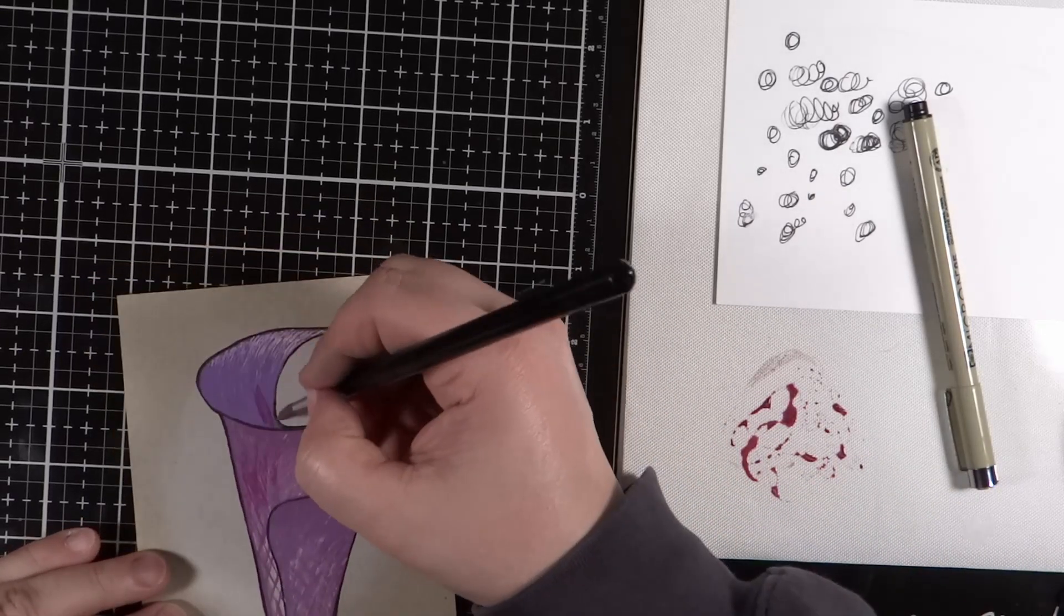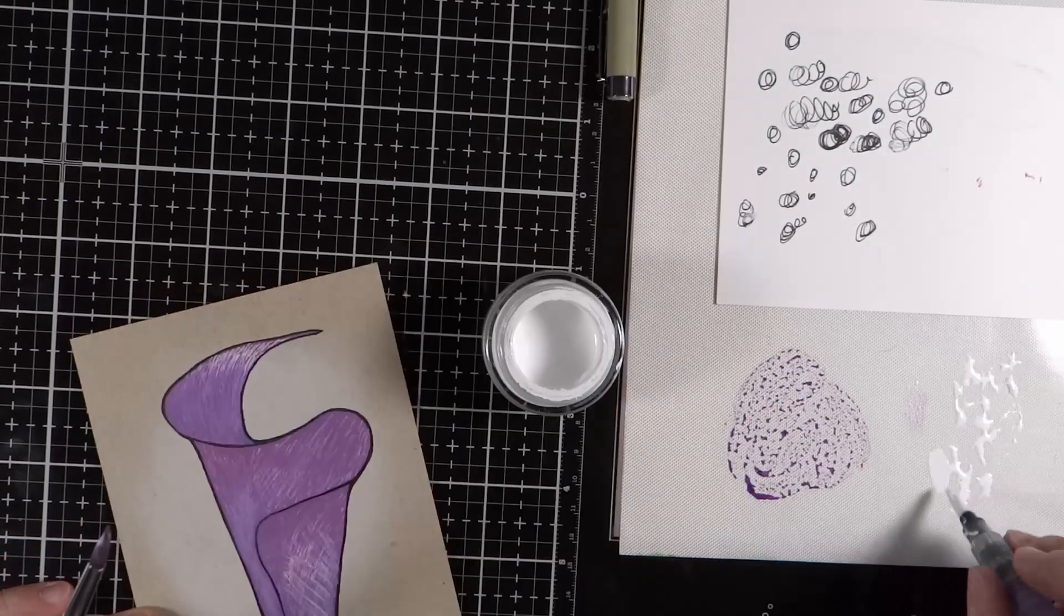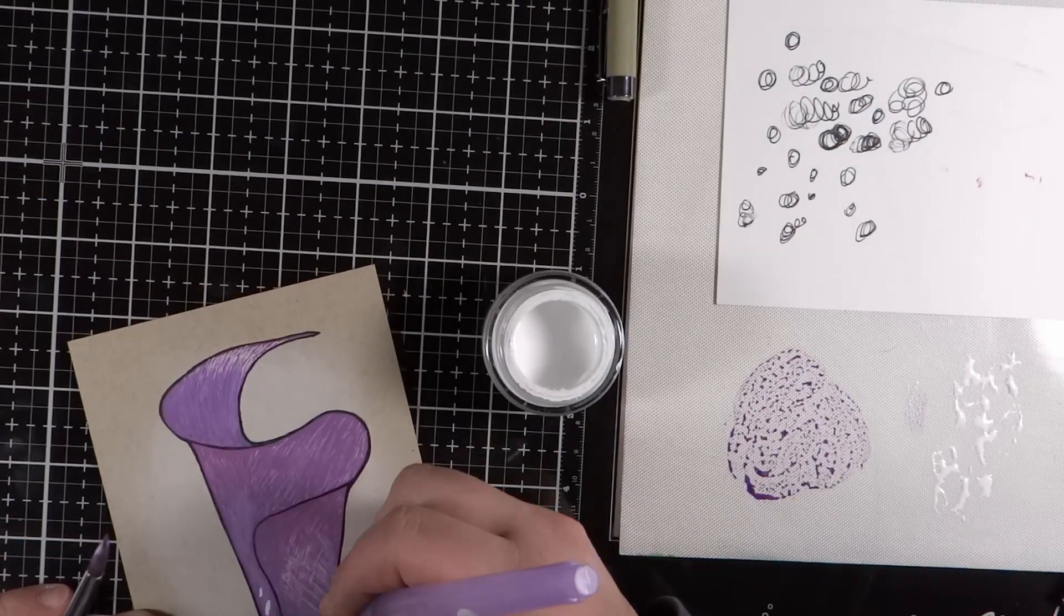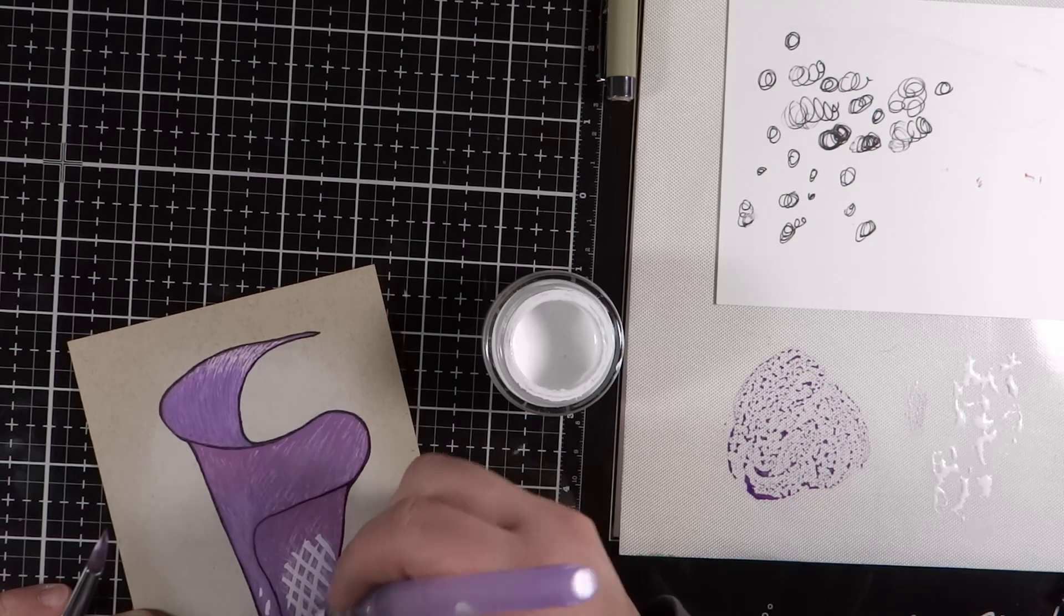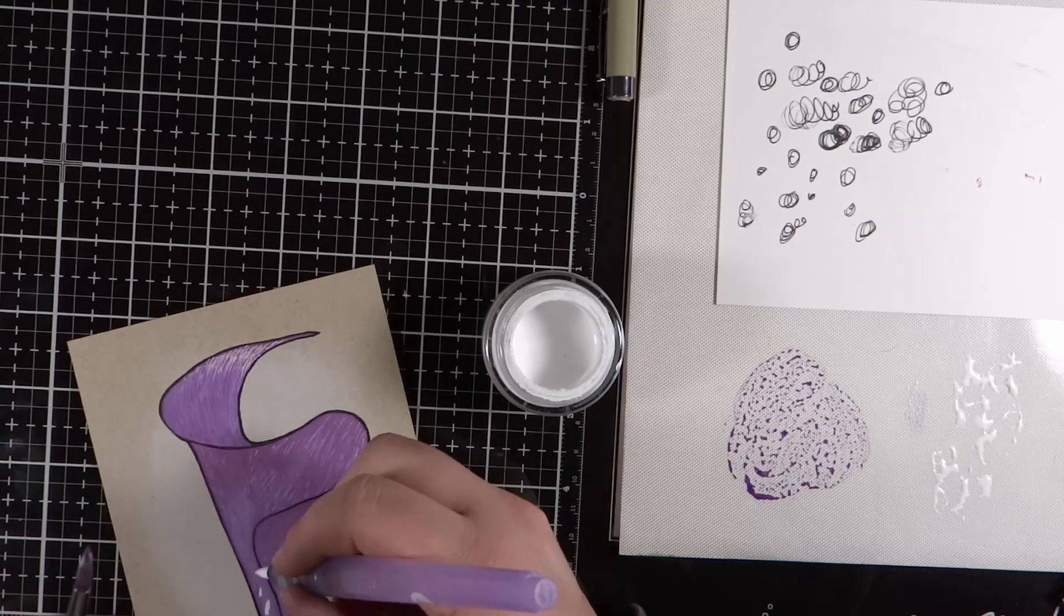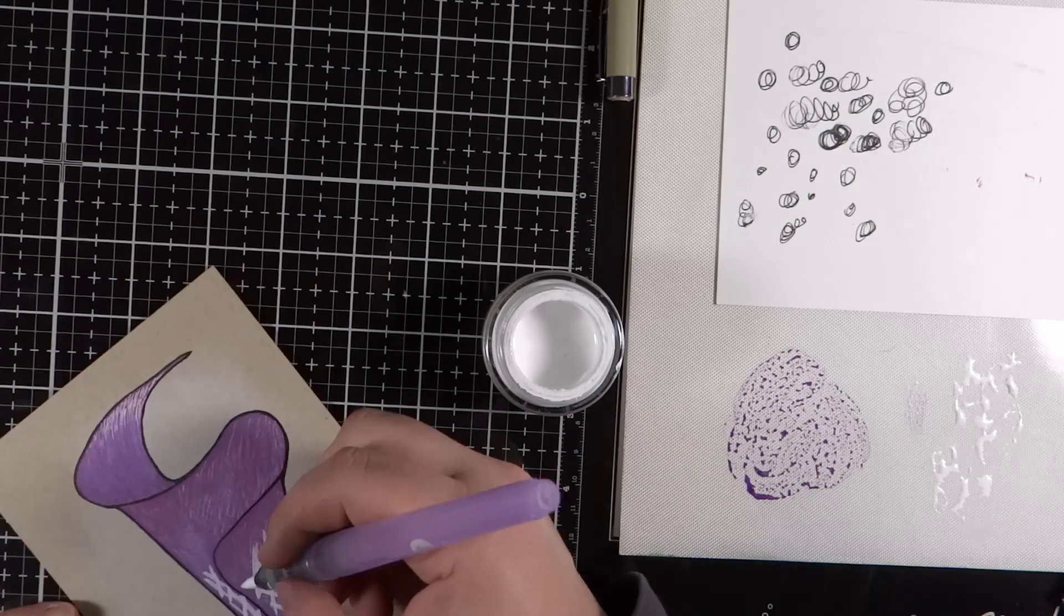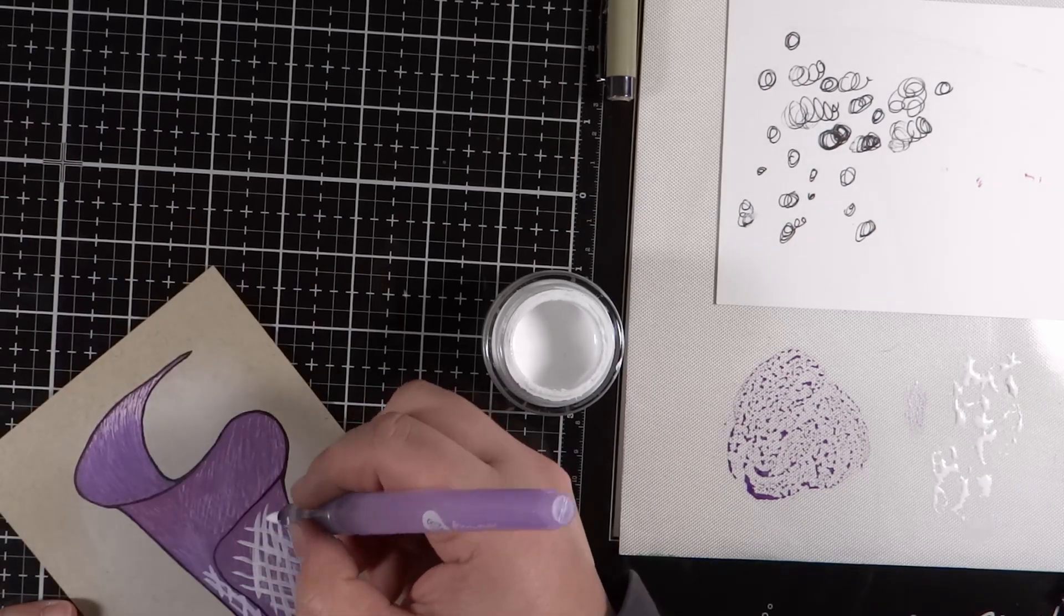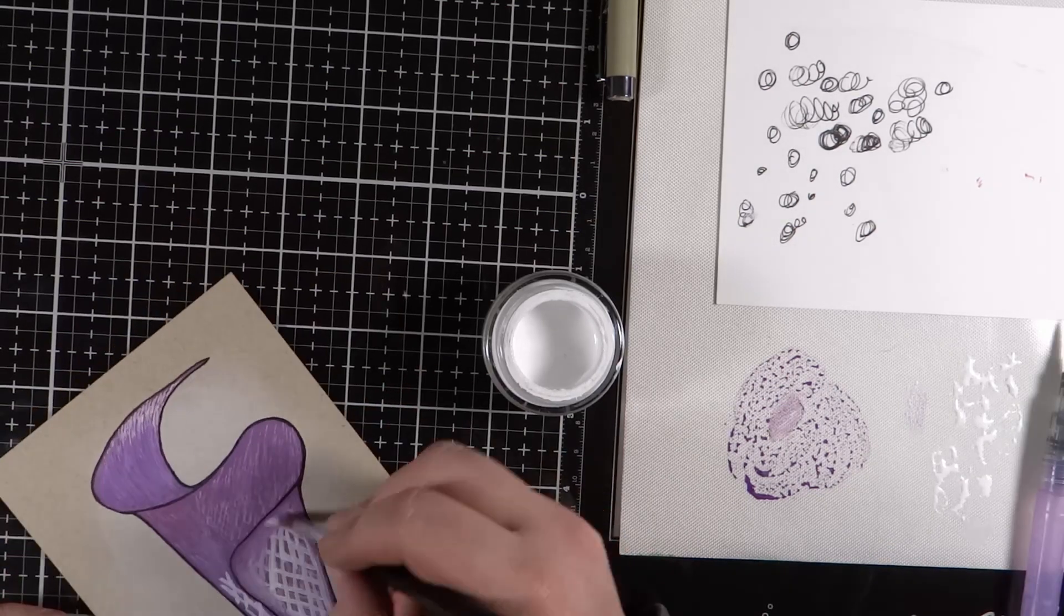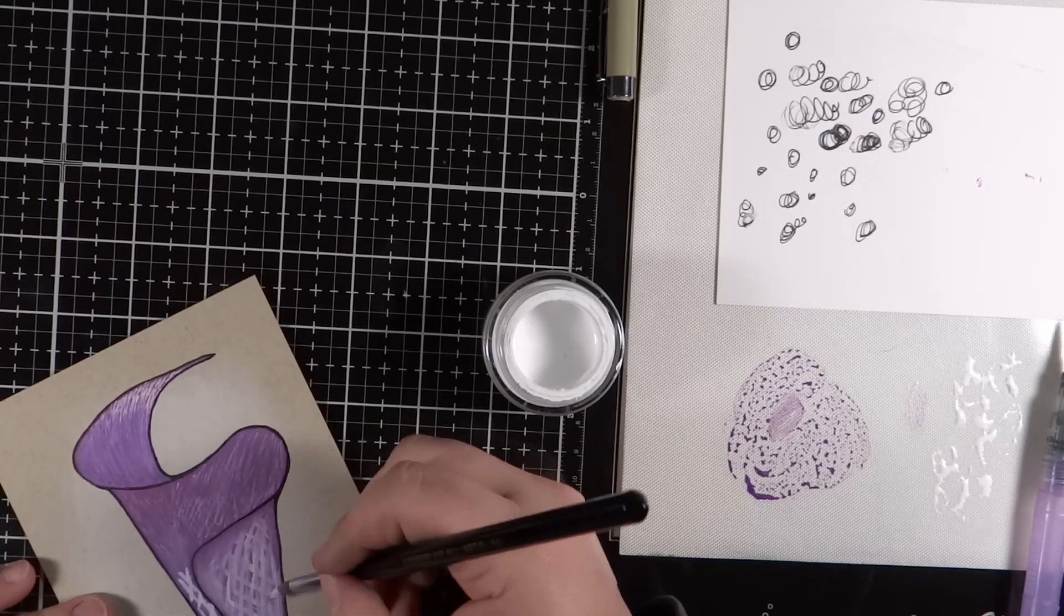I have some Copic opaque white and I'm going to use a water brush and do like a cross hatch for the lower portion. And then I use my paintbrush again and just kind of blend that in. And that just adds a lot of different colors and different textures to this.